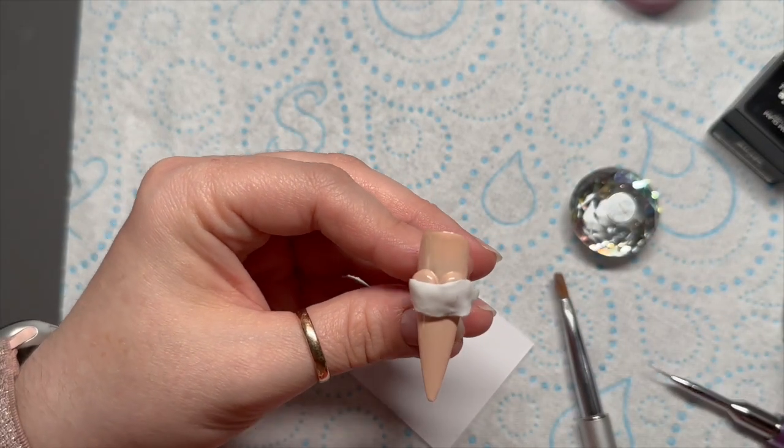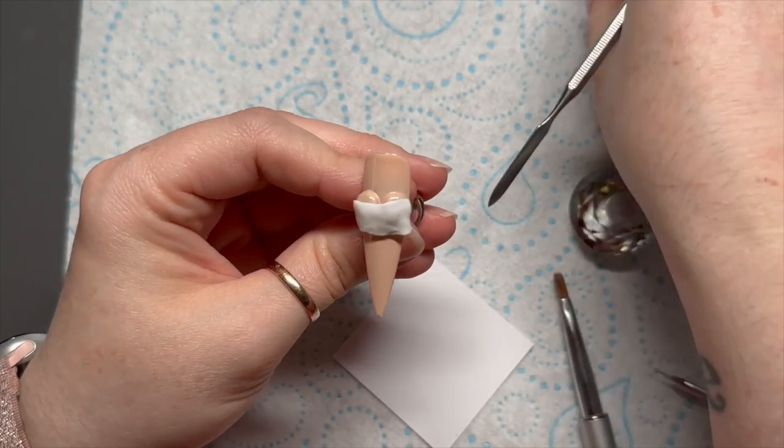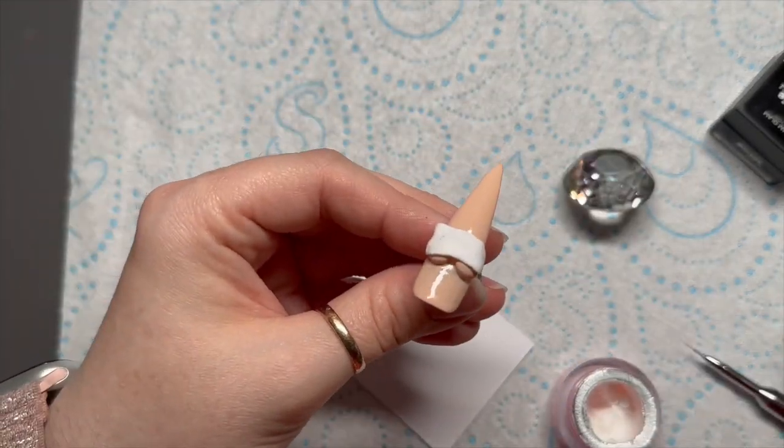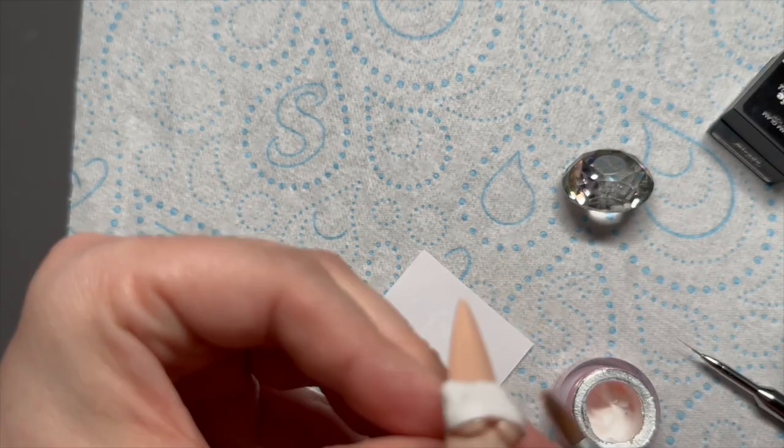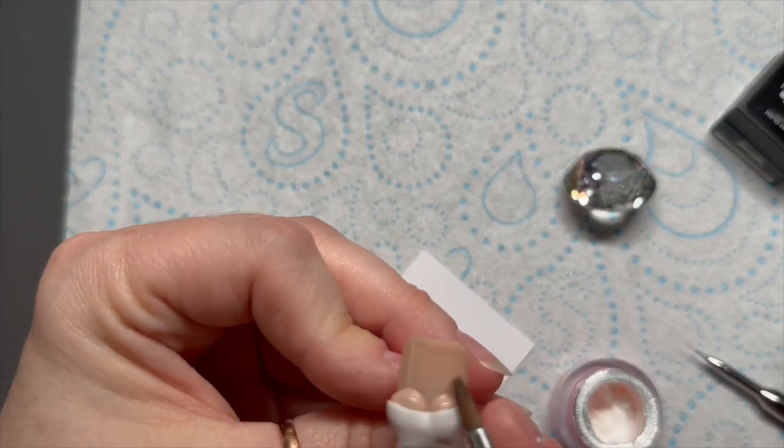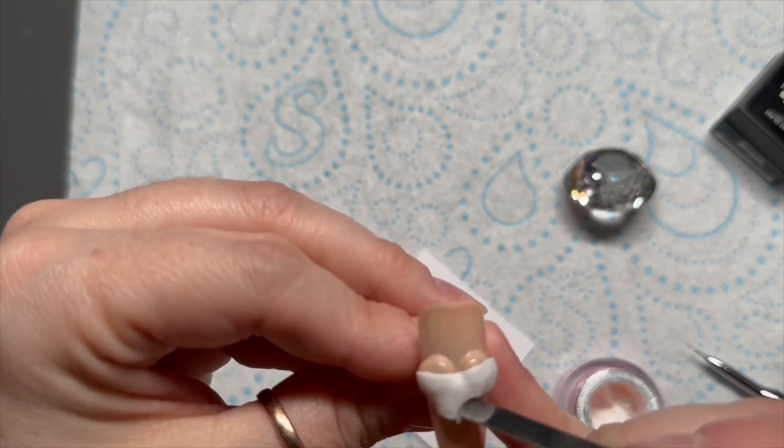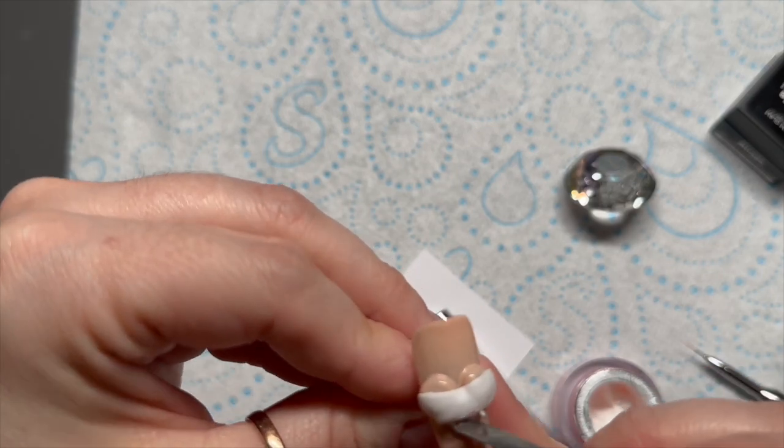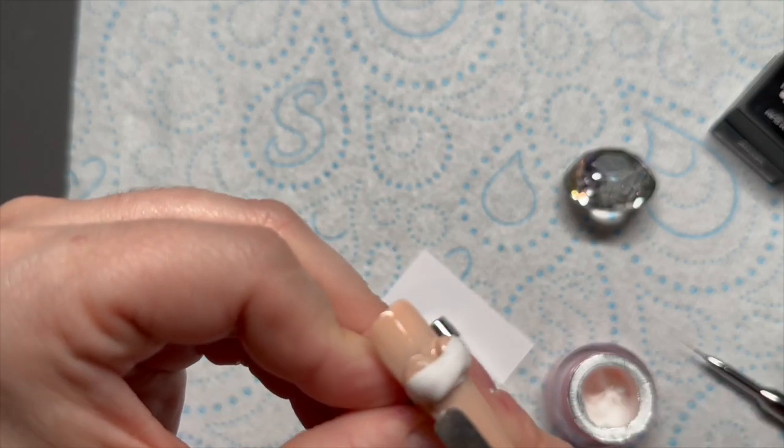Like this, and then I'm just going to kind of squidge it. I feel really awkward talking about this. Squidge it around the boobs and I'm just going to use a spatula tool to slice off some of the excess sculpting gel that we don't need. Cut the excess and pop that back in your pot because you can use that again.